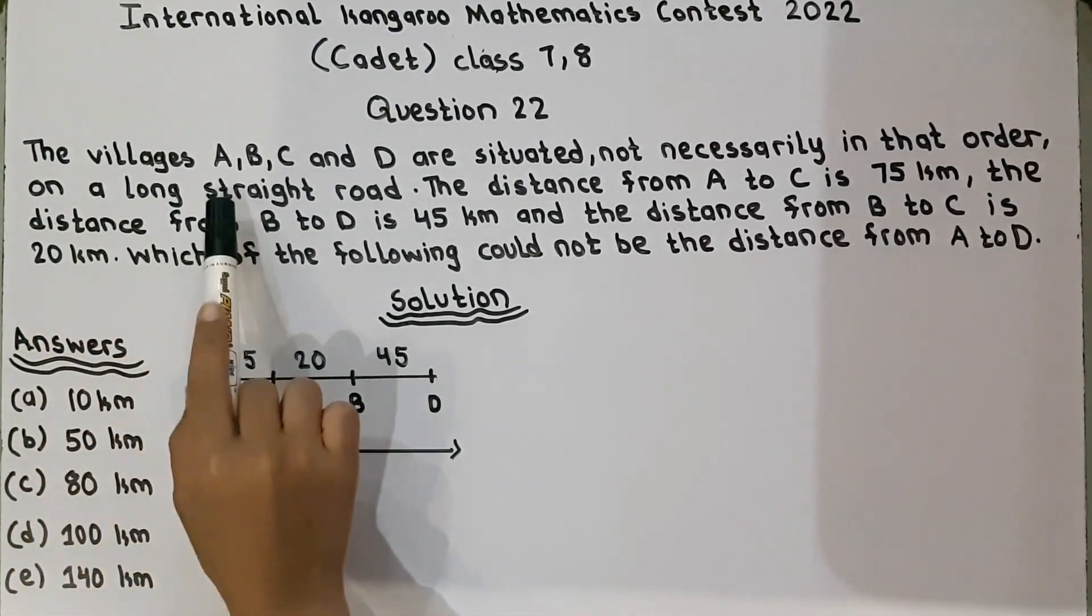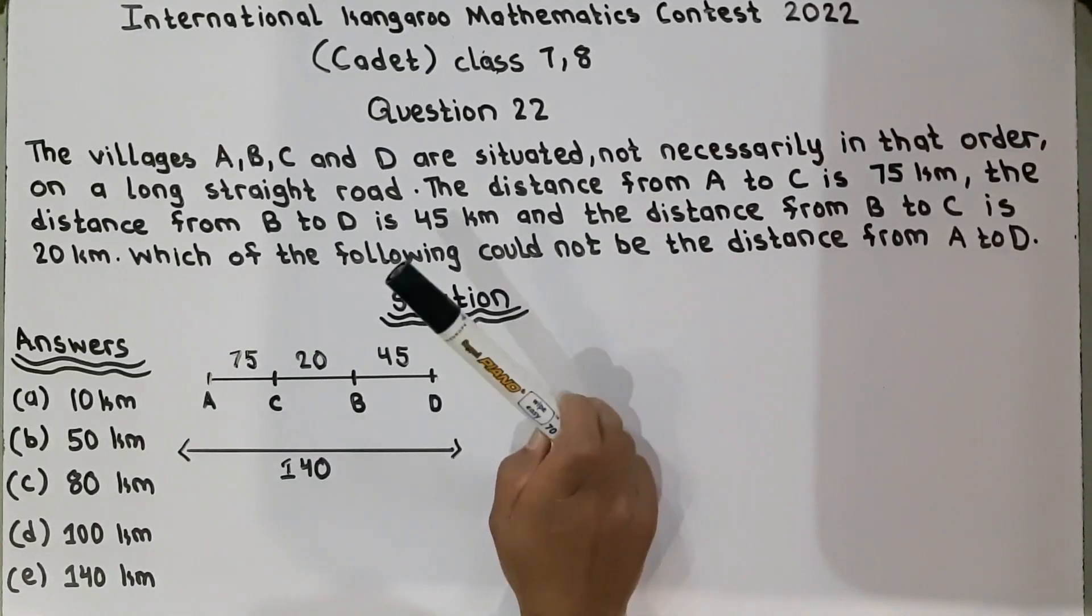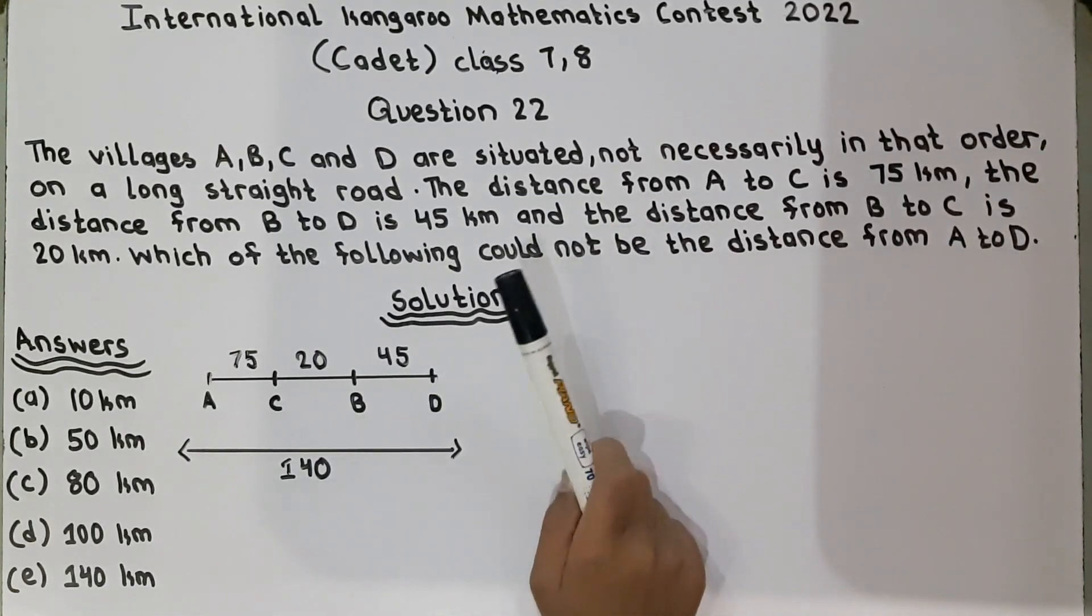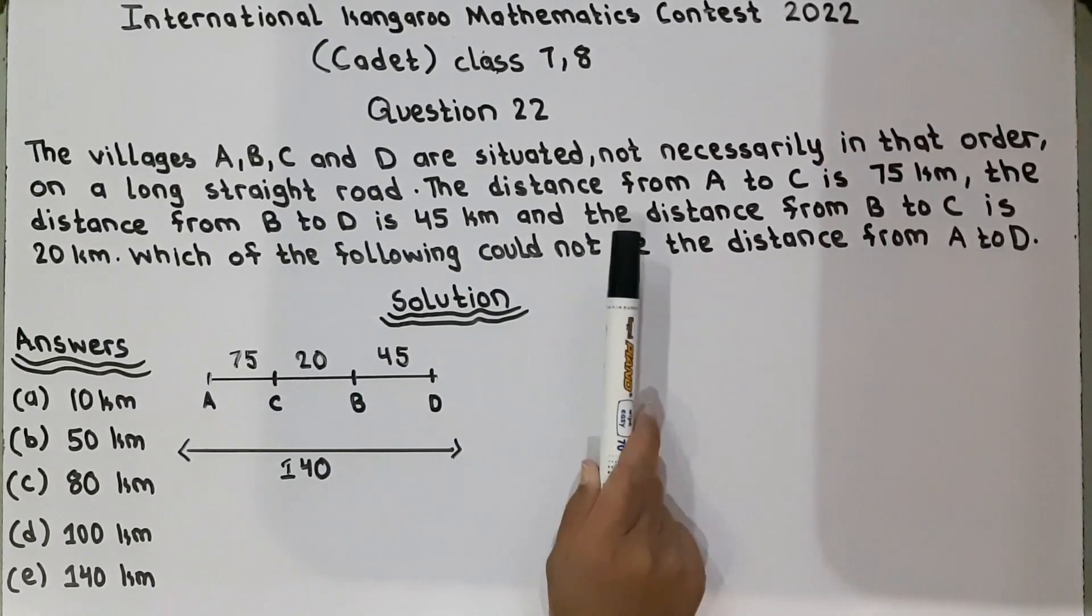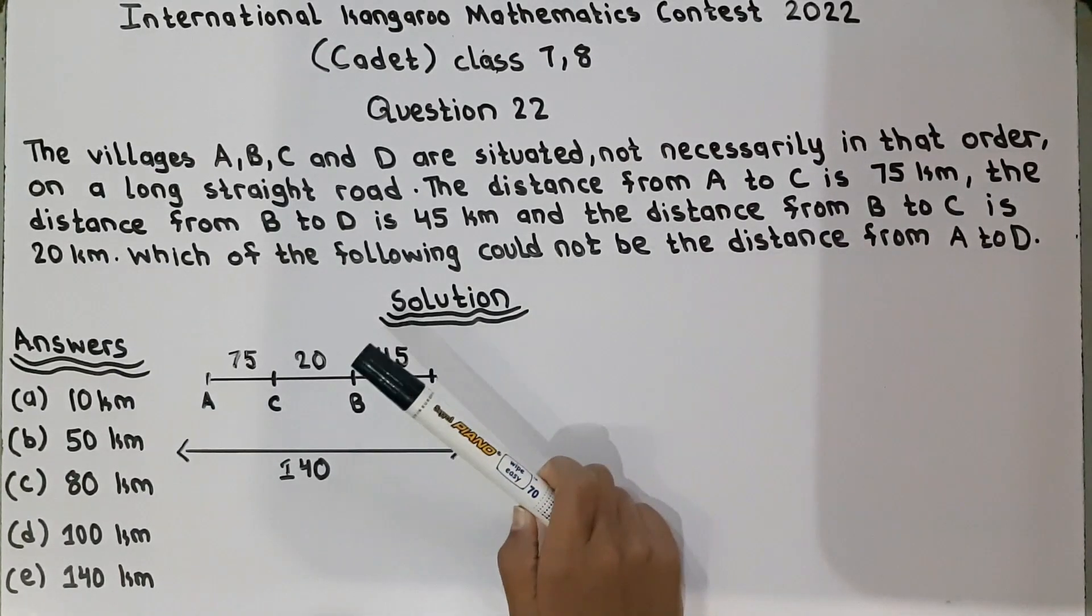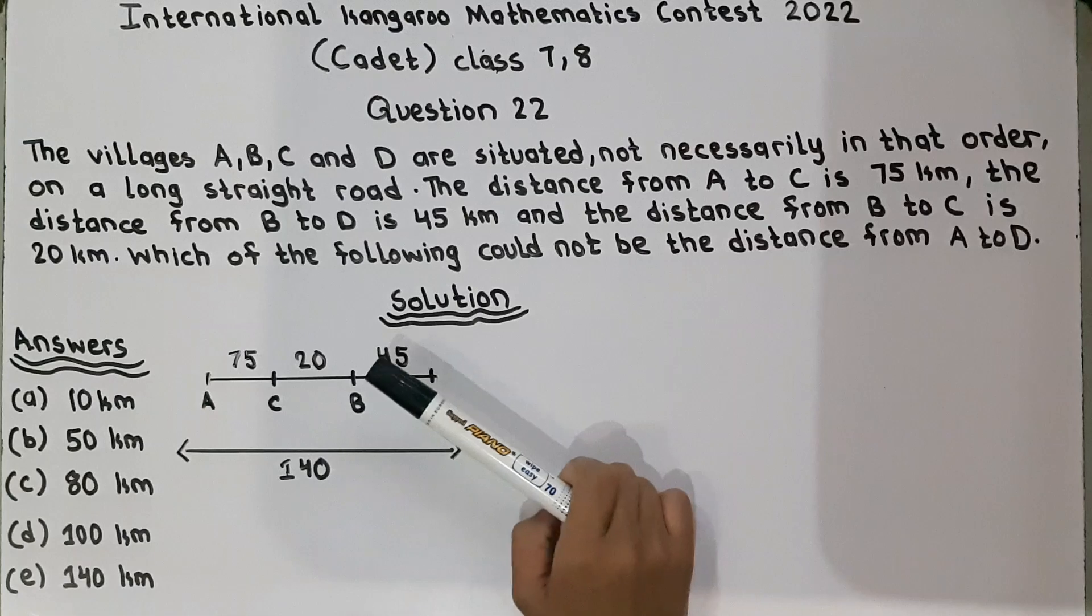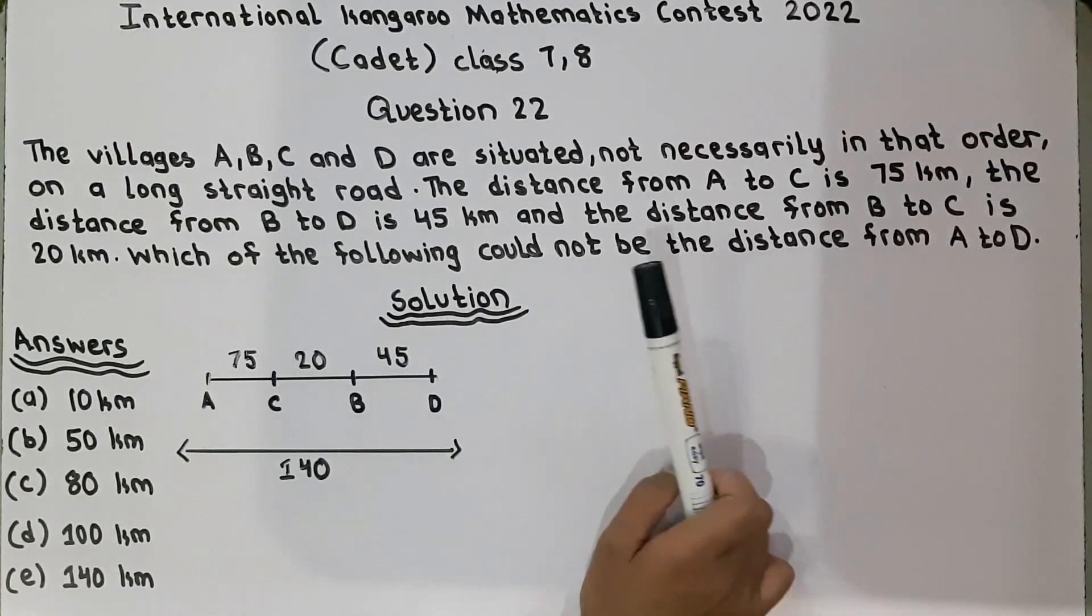The villages A, B, C and D are situated not necessarily in that order on a long straight road. The distance from A to C is 75 km, the distance from B to D is 45 km and the distance from B to C is 20 km. Which of the following could not be the distance from A to D?